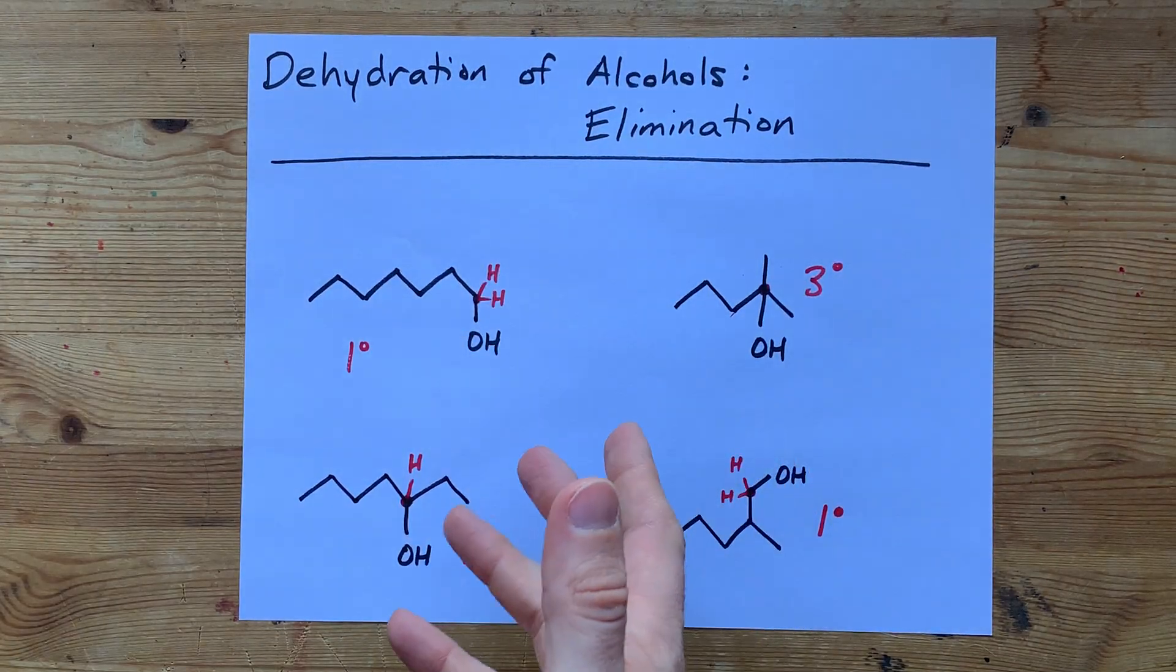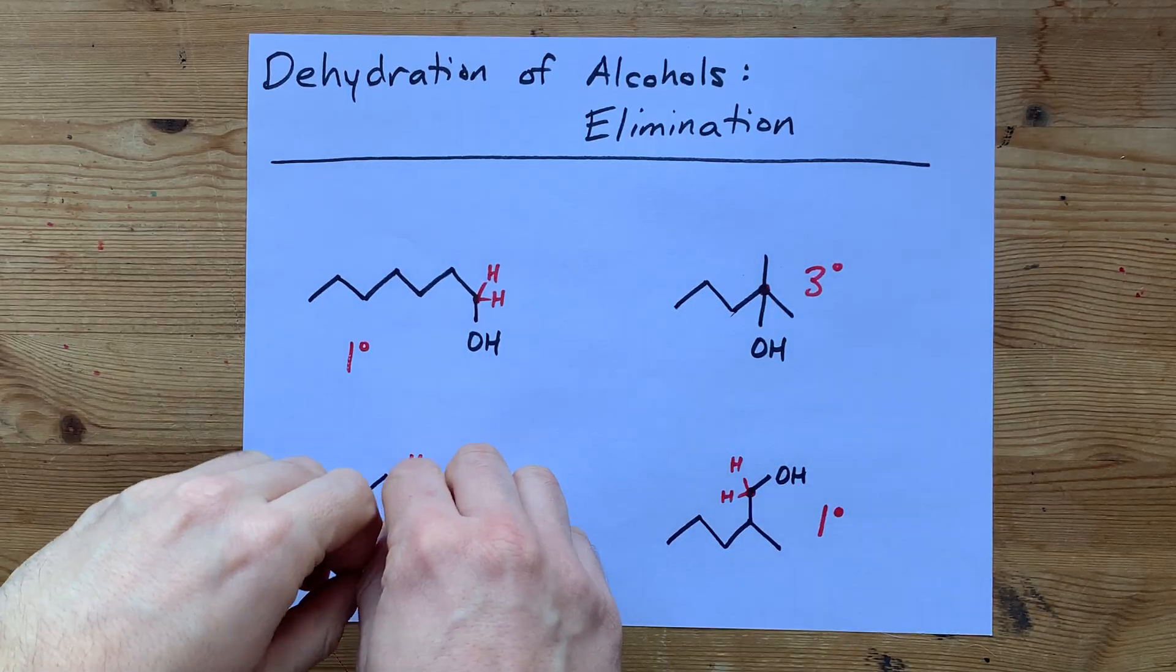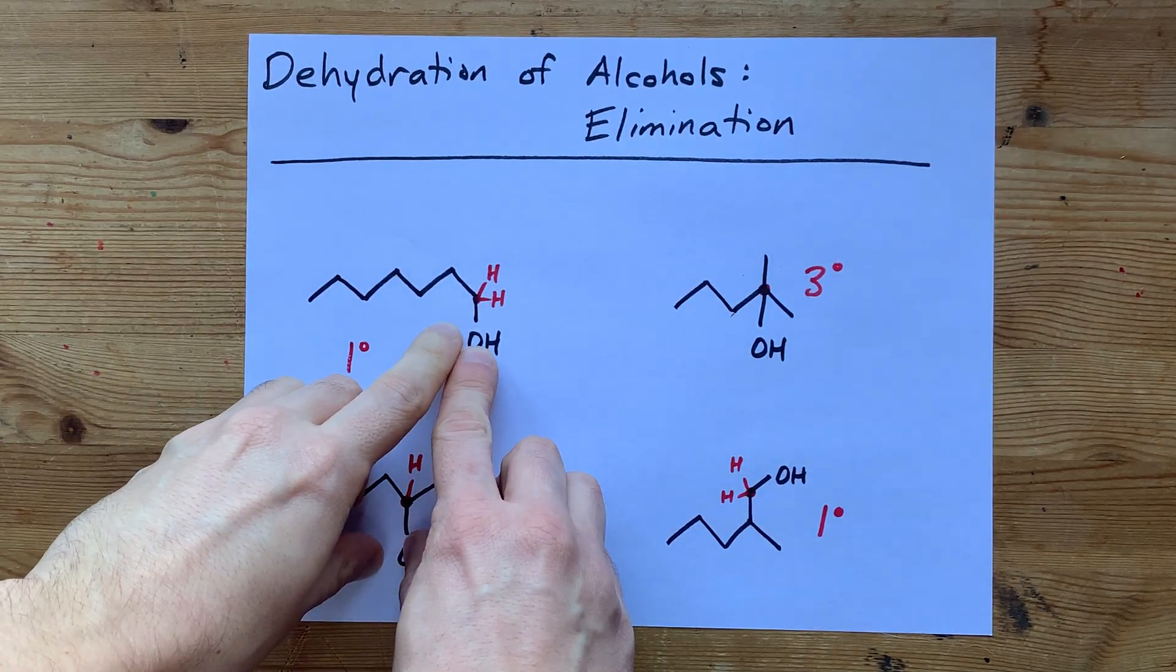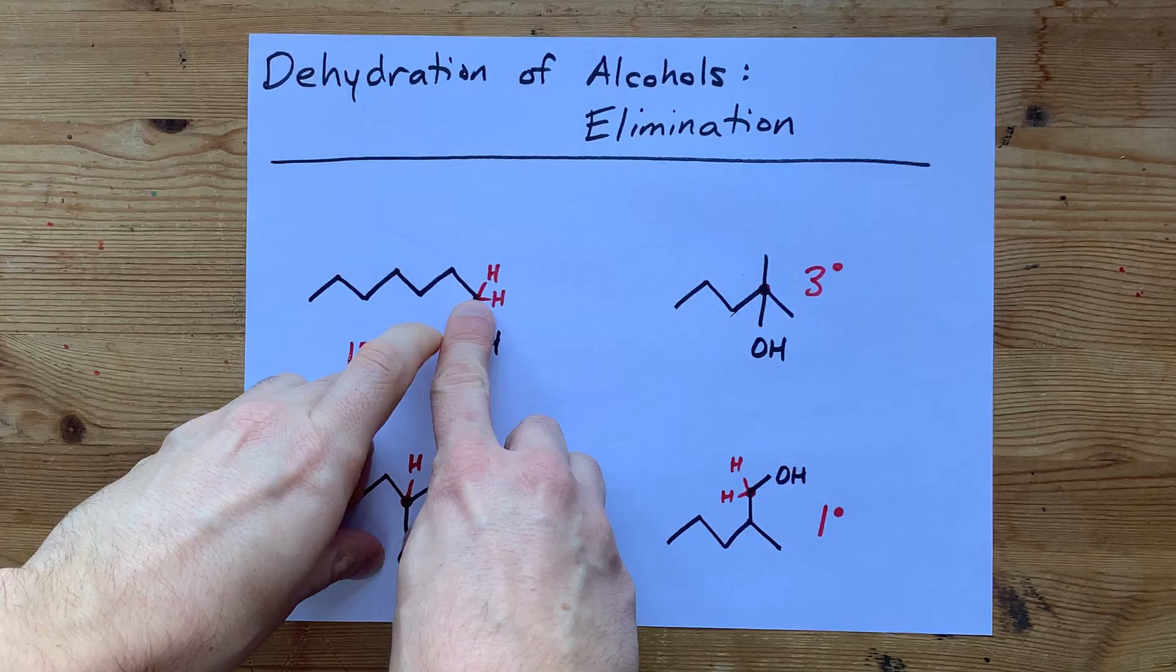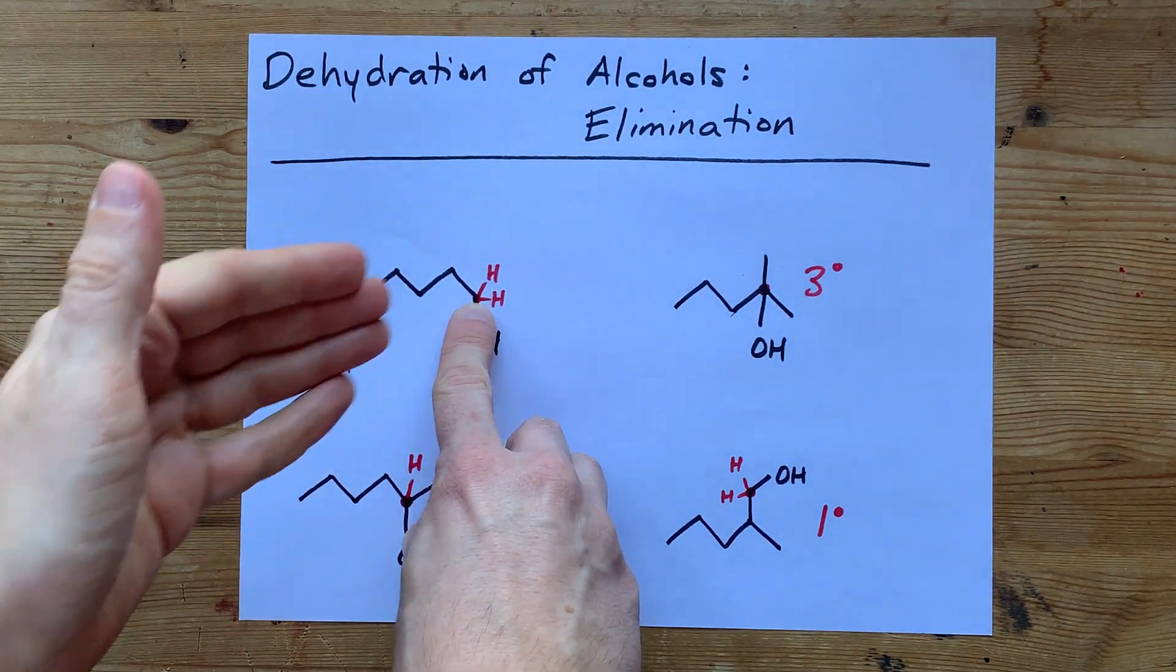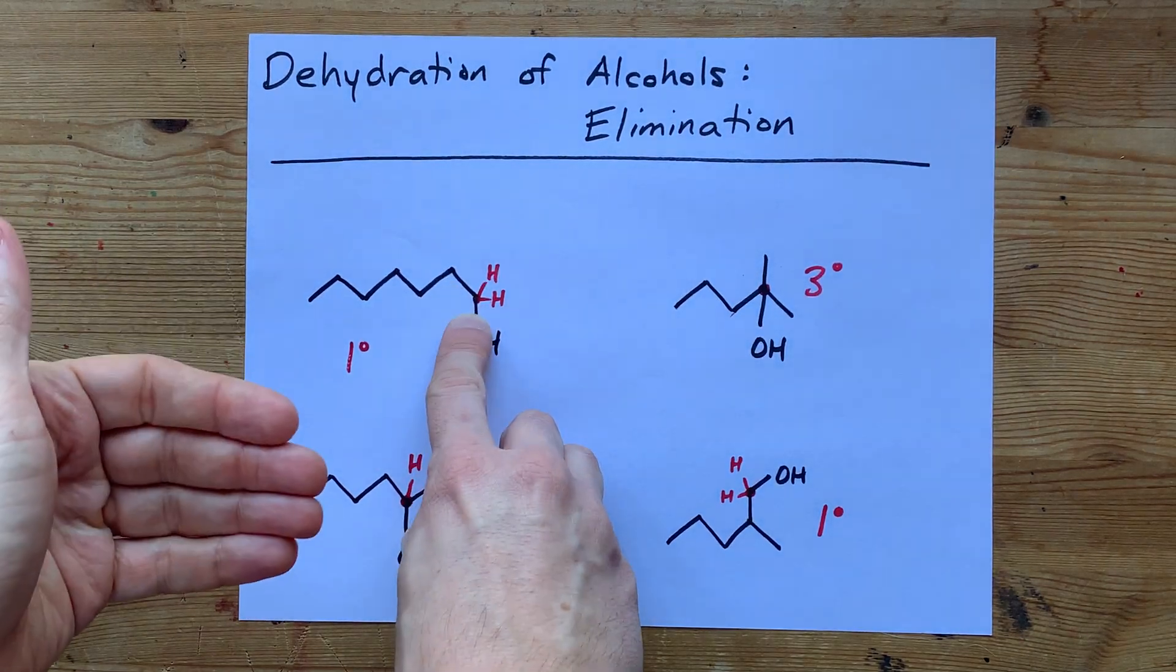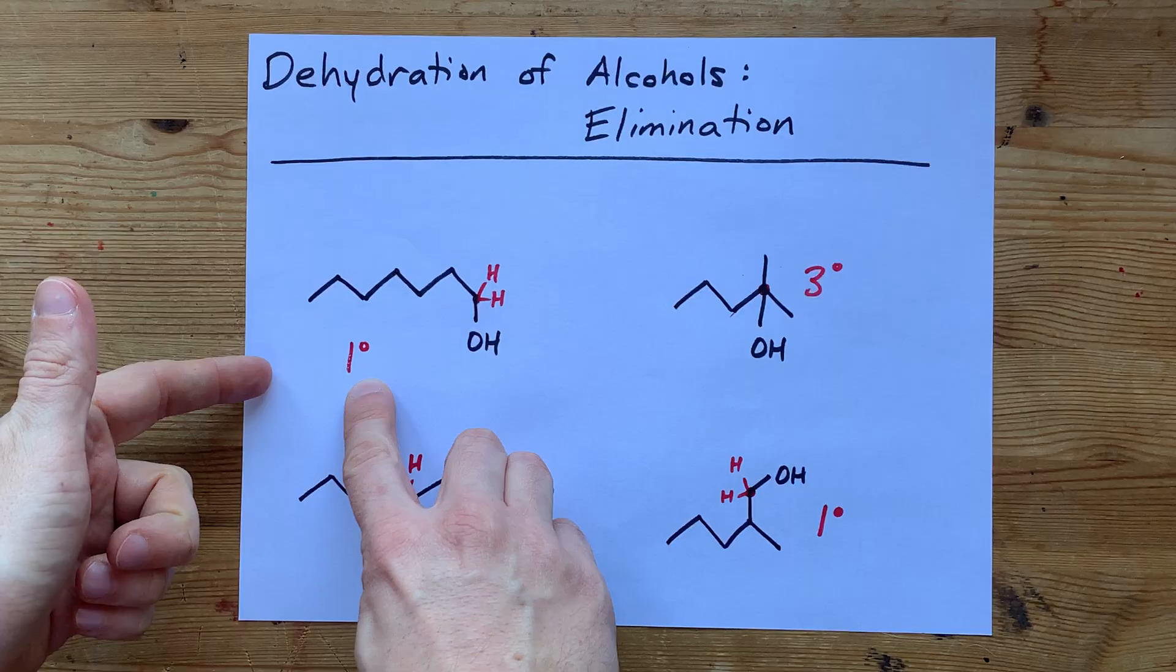Before you decide which one you're going to use, let's make sure we're all on the same page about what those words mean. This molecule, the OH, is connected to this carbon. The question is, how many other carbons is it connected to? In this case, it's only one other carbon, so it's a primary alcohol.